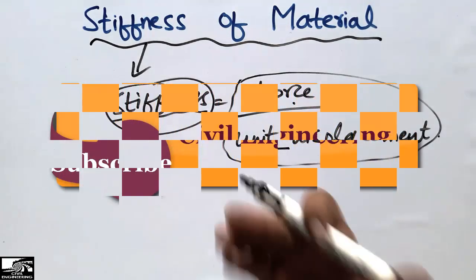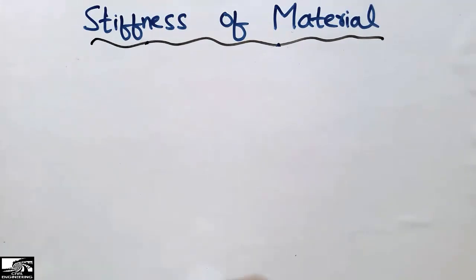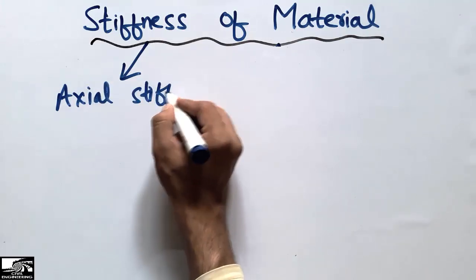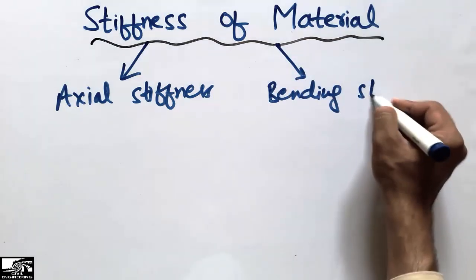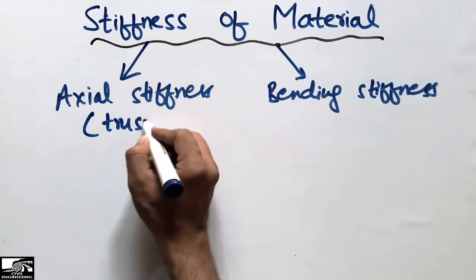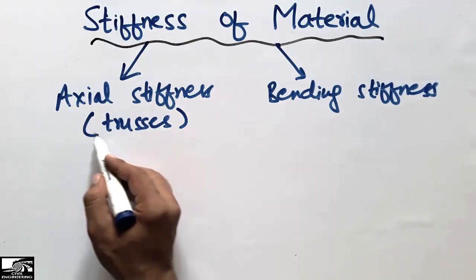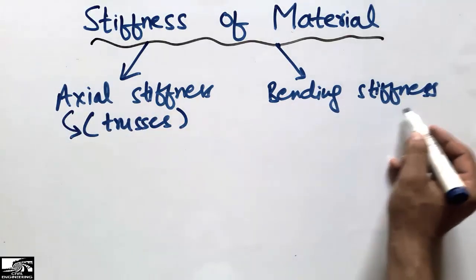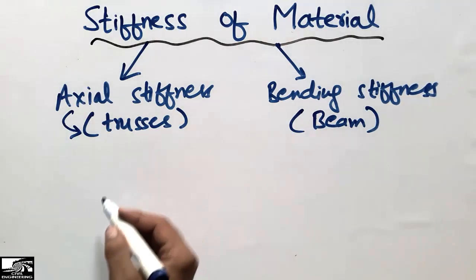Now discussing the two main types of stiffness: one is axial stiffness and the other is bending stiffness, sometimes also called flexural stiffness. Axial stiffness is predominant in trusses because in trusses we have only axial forces. Bending stiffness is predominant in beams because a beam is a bending or flexural member.